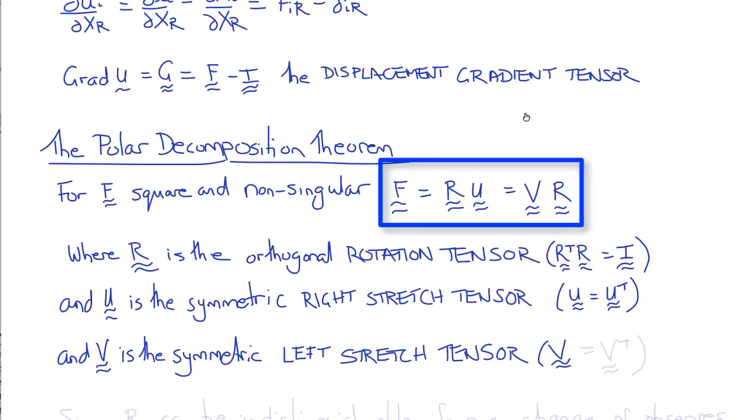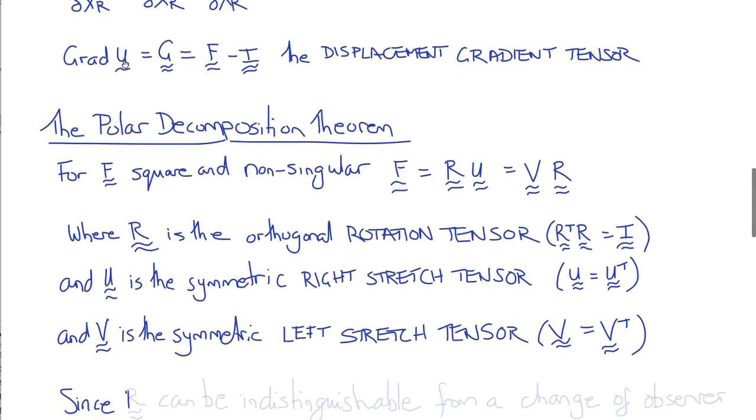So the deformation gradient can always be decomposed into a stretch and a rotation, because those are the two things that can happen to the vector. It can change its length, and it can change its orientation.